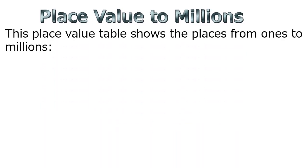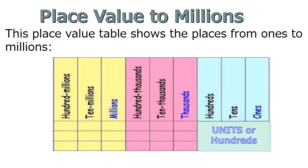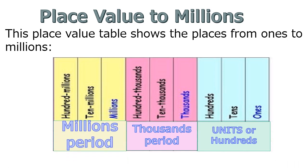Place value to millions. This place value table shows the places from ones to millions, organized in groups of ones, tens, and hundreds within each period: ones, thousands, millions.